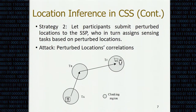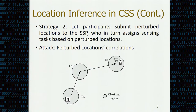For example, with three cloaking regions submitted by a participant, the SSP — by jointly considering traffic conditions and the order of appearances of those cloaking regions — might be able to infer that the participant was originally at a restaurant in the TA region and later moved to a grocery store in the TC region. These two exemplary attacks highlight the risk of location privacy breach in CSS and call for an advanced solution to protect mobile participant location privacy.